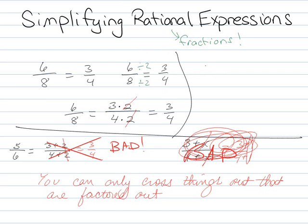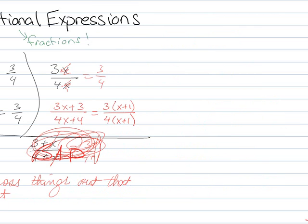So an analog would be to say, if I had 3x over 4x, since this is 3 times x and this is 4 times x, that means I could cross them out and get 3 fourths. Or if I had 3x plus 3 over 4x plus 4, I could factor out a 3 from the top and I could factor out a 4 from the bottom. And in this way, the x plus 1's would cancel out and I'd get 3 fourths.